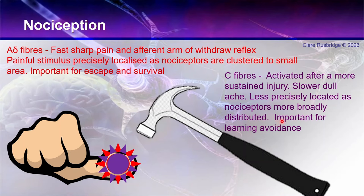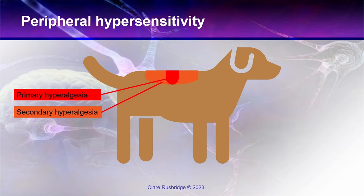The alpha-delta response protects in the acute instance for survival, while C fiber activation goes to memory — important for all animals. Dogs and cats injured in a veterinary practice will remember that context, which can have long-term bearing on learning and behavioral response. This is also important for peripheral hypersensitization: a primary area of hyperalgesia forms around the injury, but when C fibers are activated, a secondary area beyond the injury also becomes sensitive — touching that secondary area also causes a reaction.